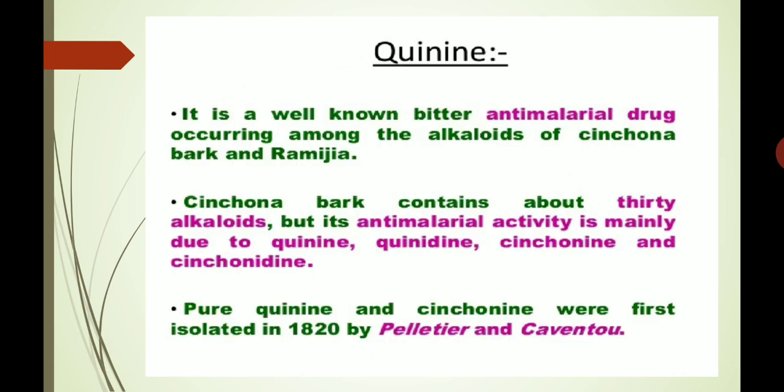We will discuss some physical as well as chemical properties of quinine. Quinine is a well-known bitter antimalarial drug occurring among the alkaloids of cinchona bark and ramesa. Cinchona bark contains about 30 alkaloids, but its antimalarial activity is mainly due to quinine, quinidine, cinchonine, and cinchonidine. Pure quinine and cinchonine were first isolated in 1820 by Pelletier and Caventou.